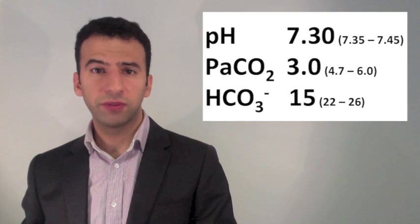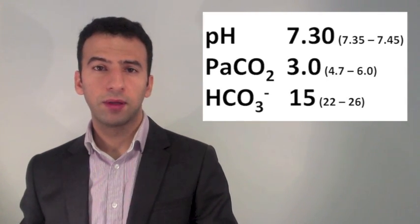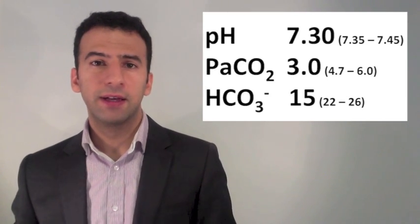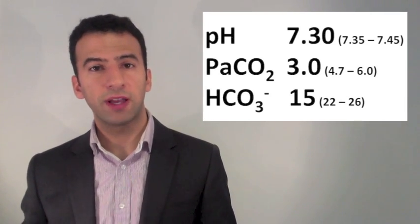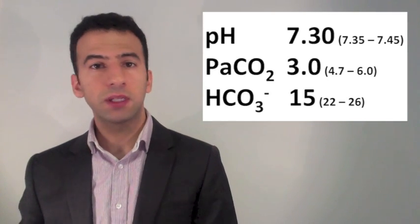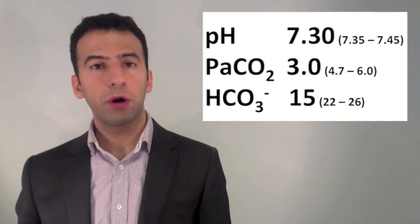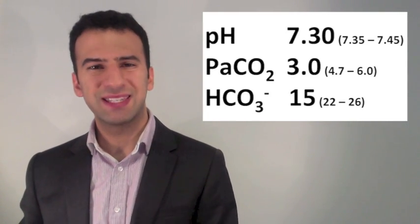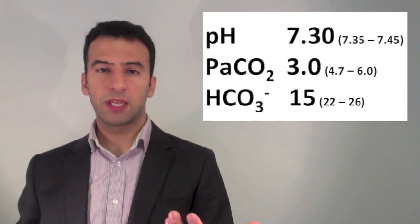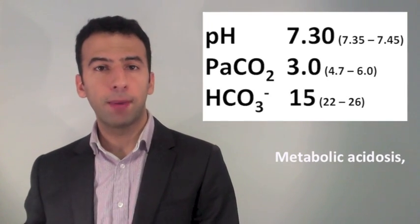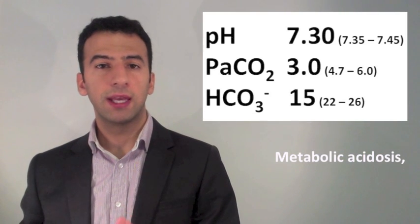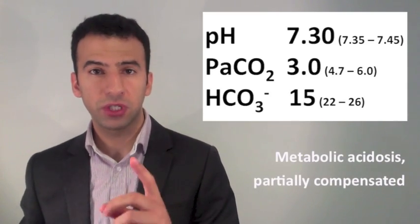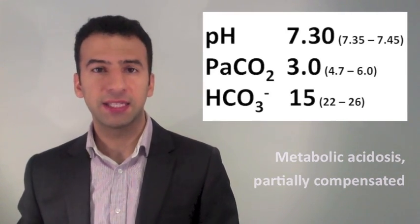For this next example, you can pause the video and have a couple of minutes before coming back to it. The pH is 7.30 — acidic. Step 2: the CO2 is 3.0, that's alkalinising. They're not moving in the same direction — in fact, they're moving in opposite directions — so the problem is probably metabolic. In Step 3, the bicarbonate is 15 — that's acidifying, moving in the same direction as the pH, confirming a metabolic acidosis. Since the CO2 is low and alkalinising, there is partial compensation — a partially compensated metabolic acidosis.